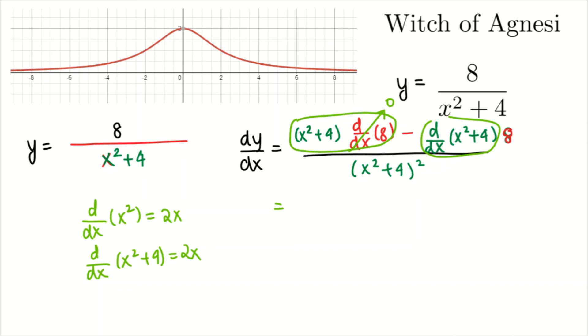And we just need to plug all this information in and you will just get negative 16x divided by x squared plus 4, all of this squared. And this is the derivative function.